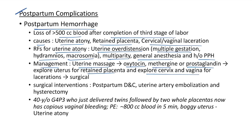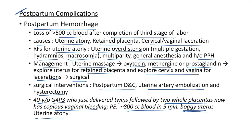If bleeding is still not controlled, surgical interventions include postpartum dilatation and curettage, uterine artery embolization, and hysterectomy. Clinical case: 40-year-old G4P3 delivered twins followed by two complete placentas now has copious vaginal bleeding. Examination reveals ~800 mL blood loss in 5 minutes and boggy uterus — this is a case of uterine atony causing postpartum hemorrhage.